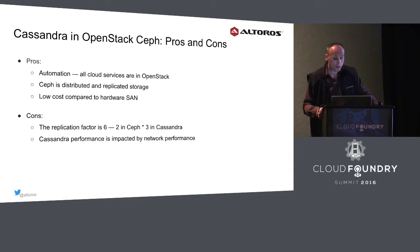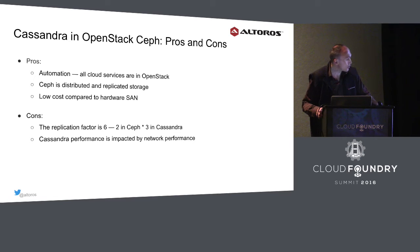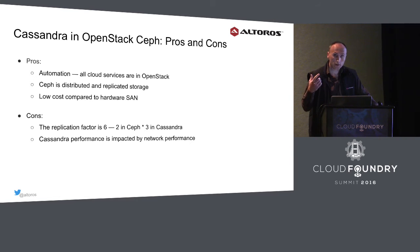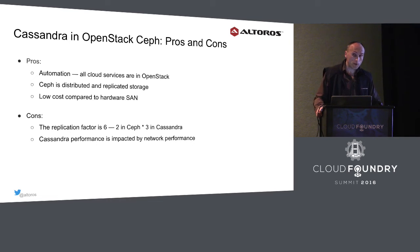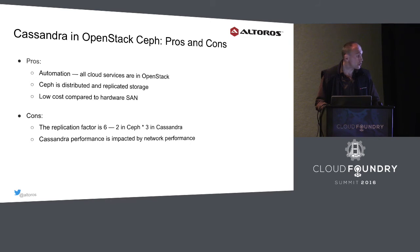What about the cons? With Ceph storage, we have an additional replication factor. Combining with Cassandra's data replication, if we use a replica factor of three — which is the recommended factor in Cassandra — we end up with data blocks replicated six times. The performance of the cluster also heavily depends on network performance, so it is recommended in OpenStack deployments to use 10 gigabit networks for storage services.